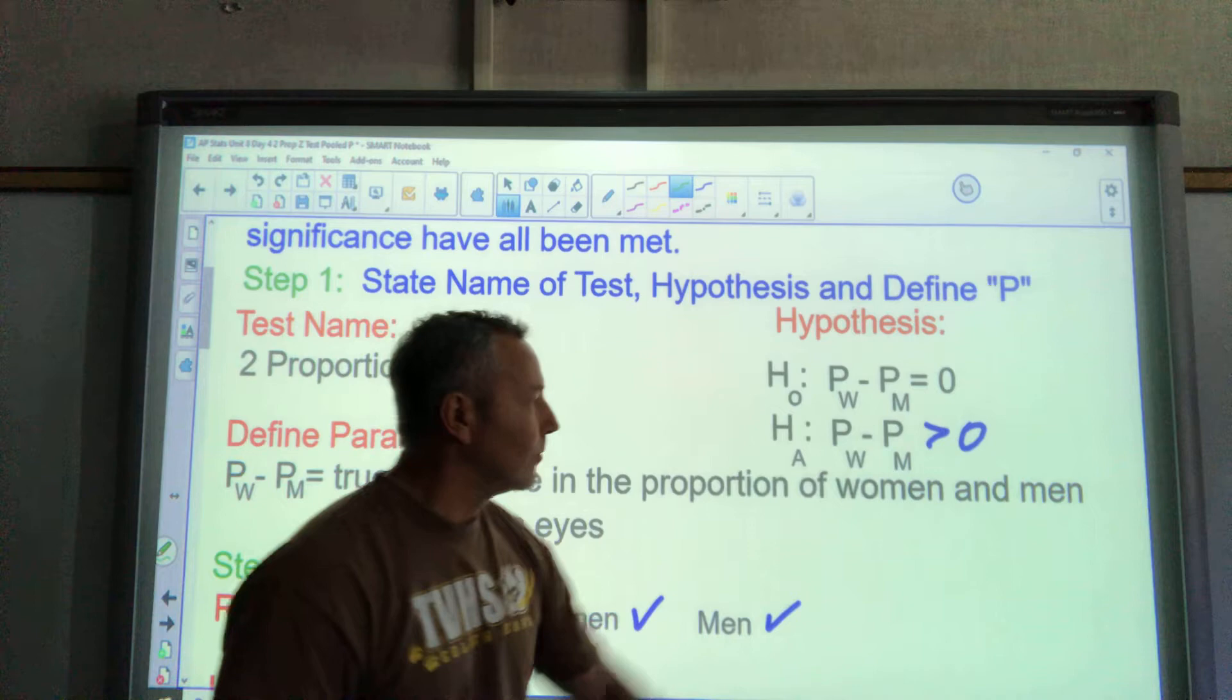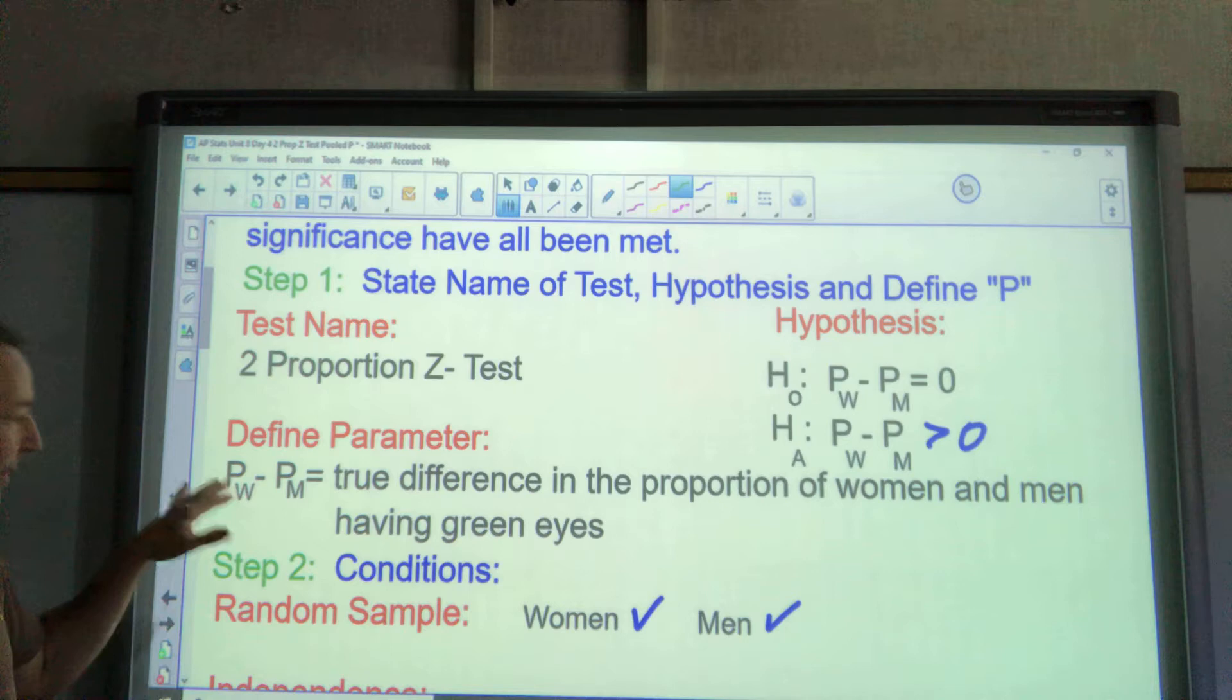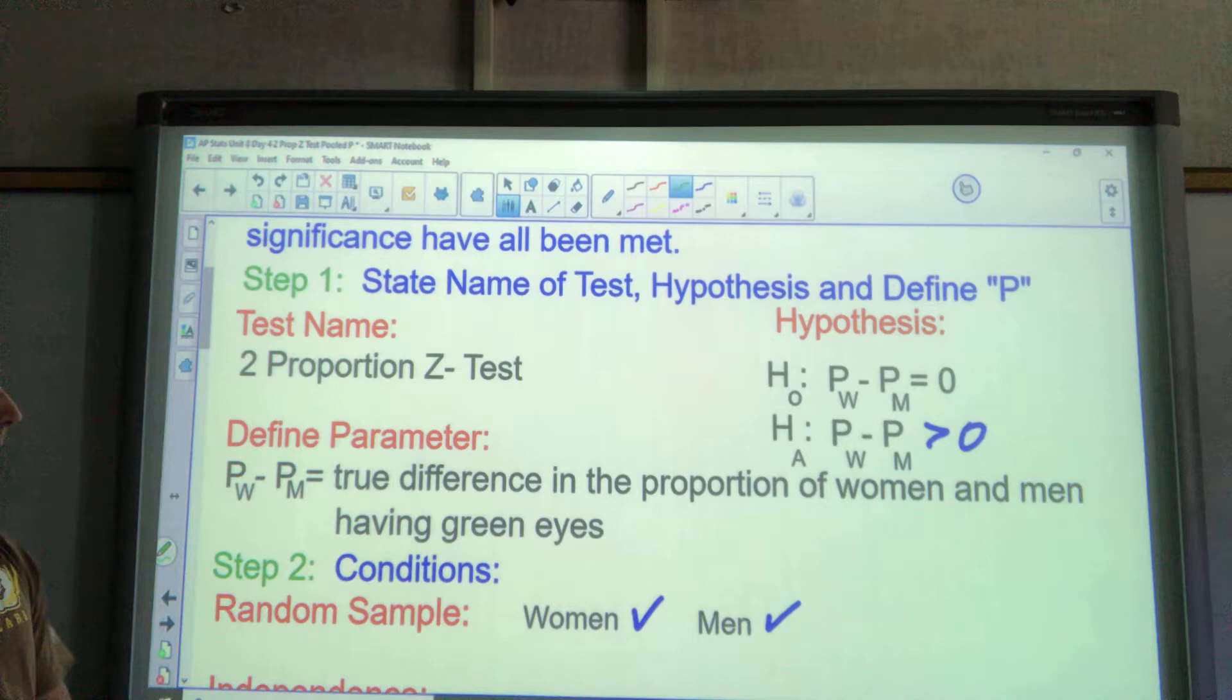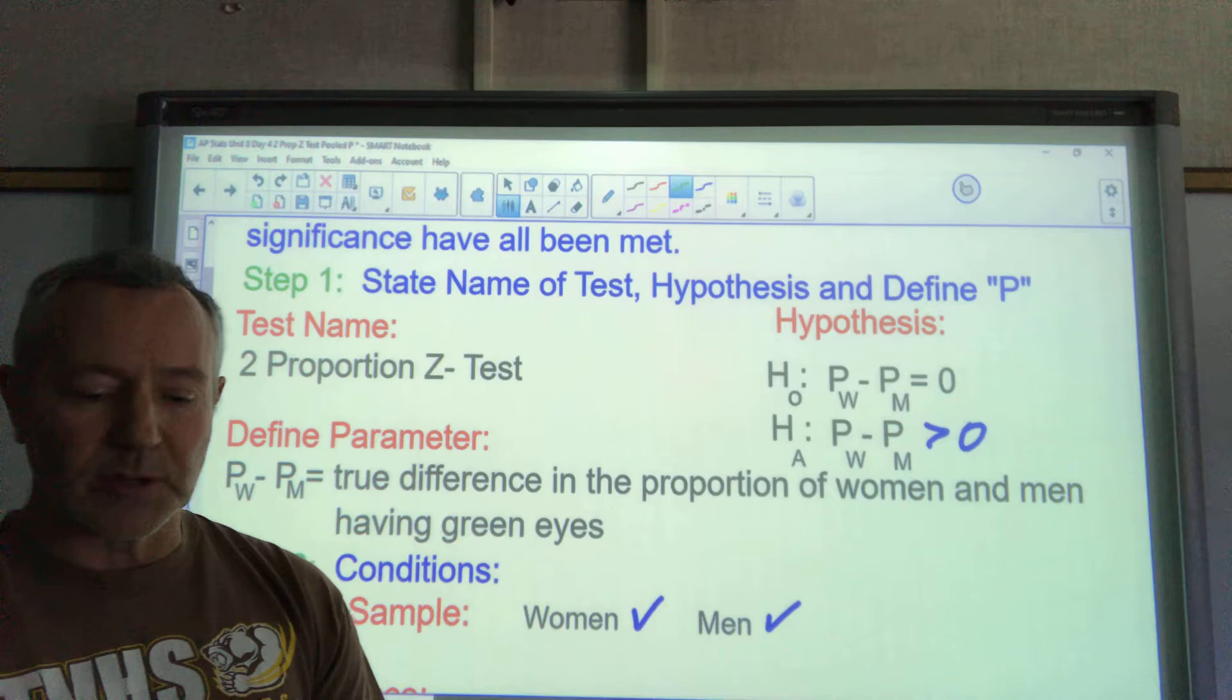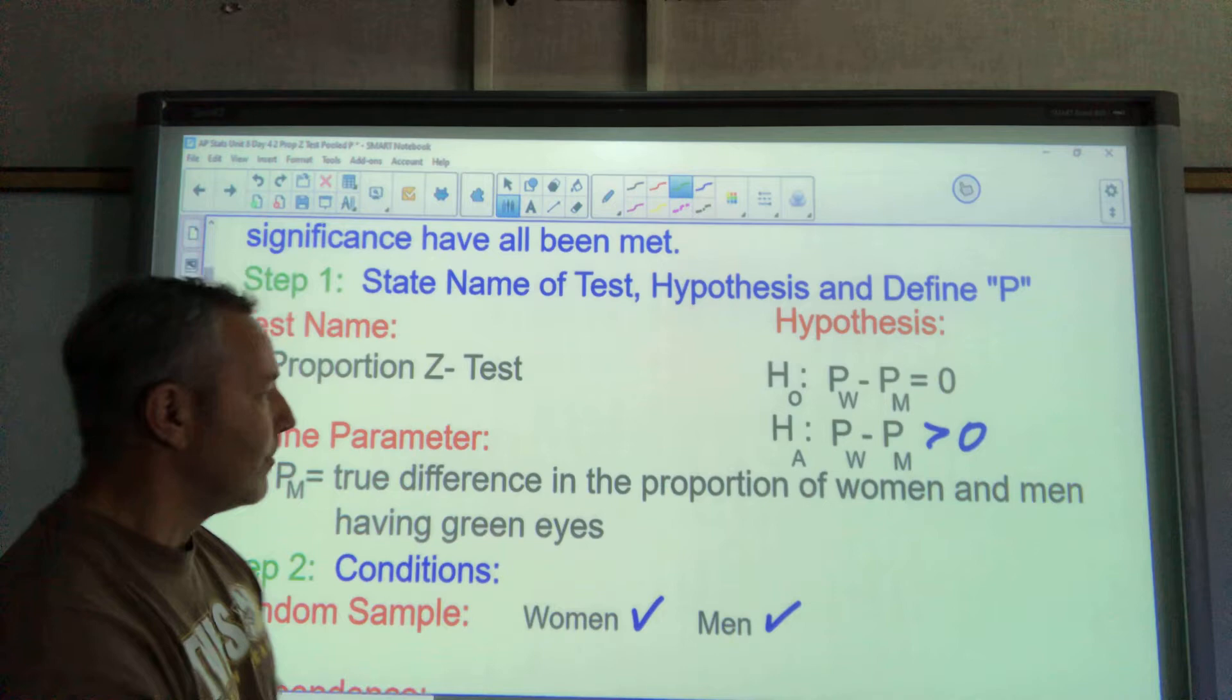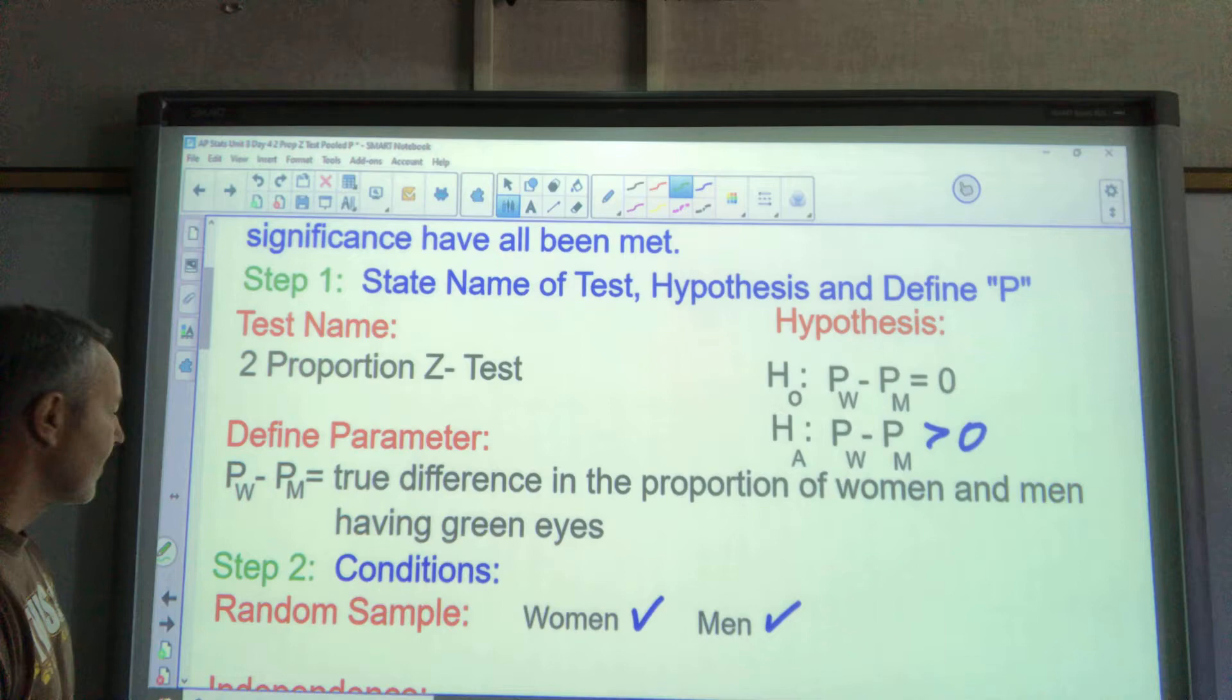Define the parameter. Our parameter here is women minus men. So the proportion of women minus the proportion of men—that symbol represents the true difference in the proportion of men and women having green eyes. You could do P of W and say that's the true proportion of women with green eyes, and then do it separate. P with an M would represent the true proportion of men with green eyes, and then you're subtracting those two. I like to condense them into one.